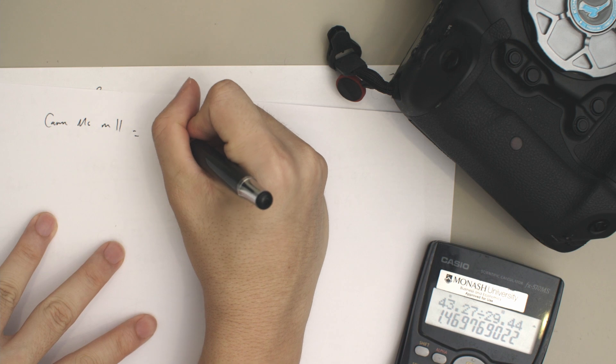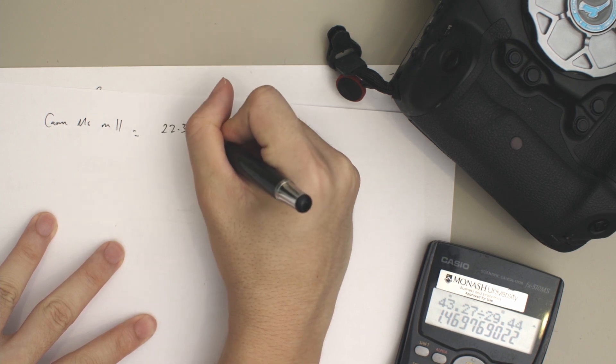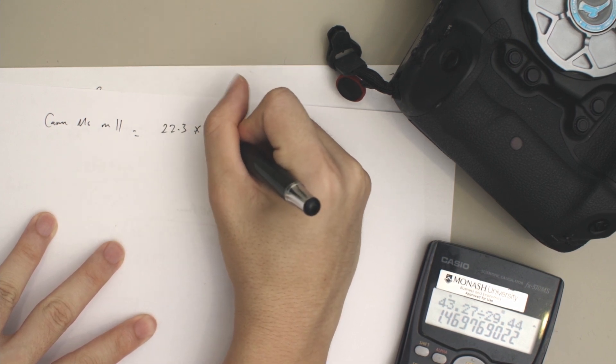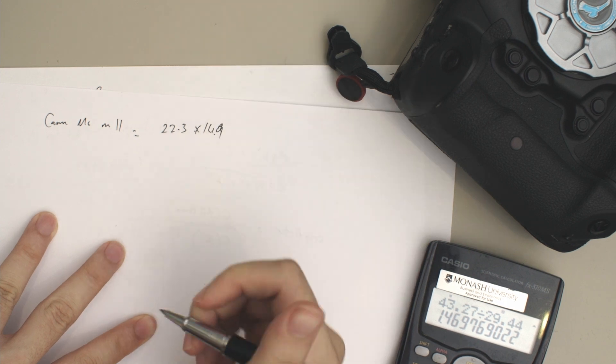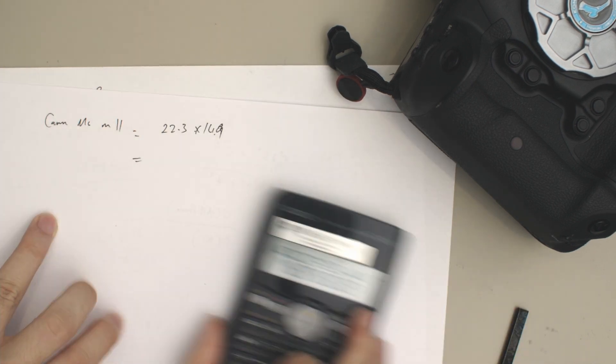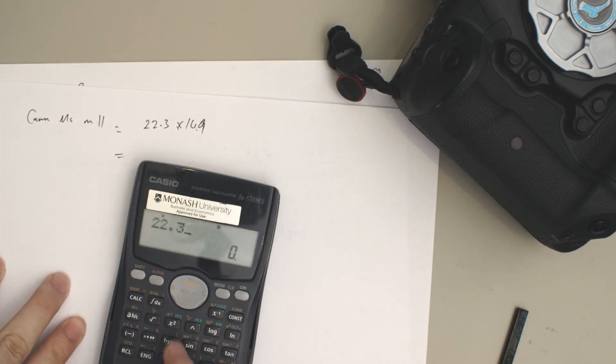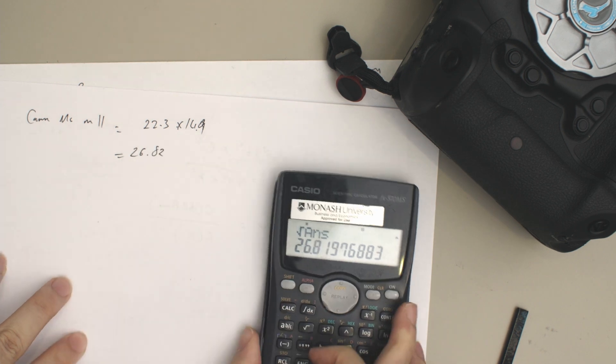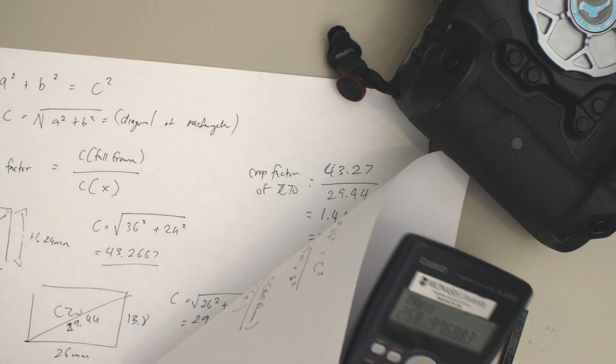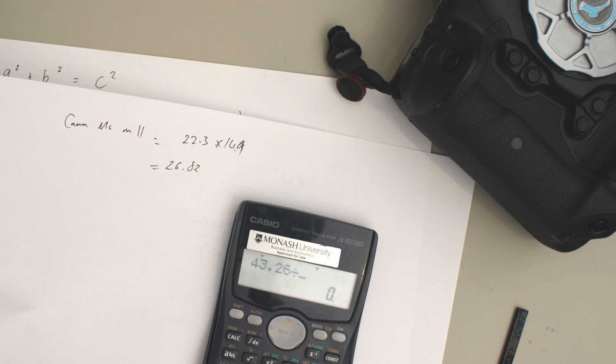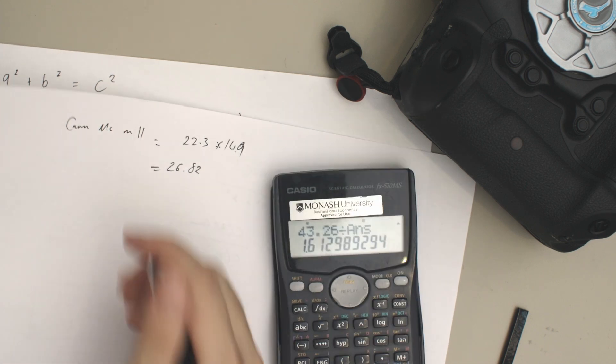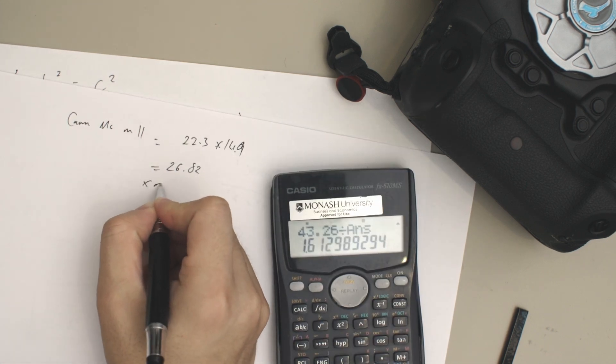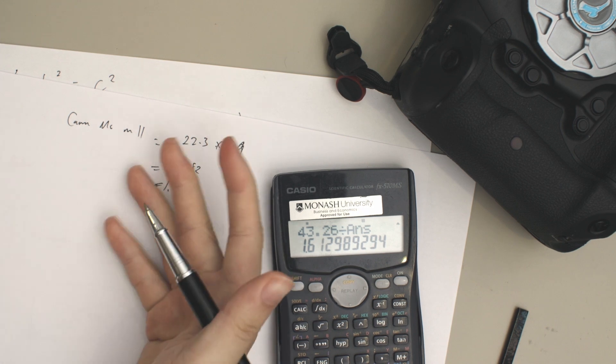The sensor size of the Canon F6 Mark II is 22.3 by 14.9, so basically we're just going to input that into our formula: 22.3² + 14.9². If we just take our full frame value, 43.27, divided by that answer, we get a crop factor of 1.6, and that's how we do it.